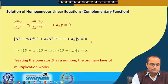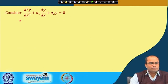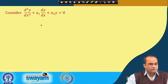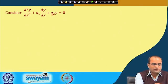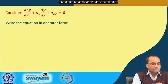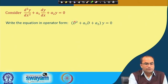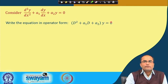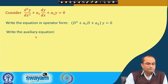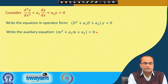Today we get to the solution of this differential equation. For simplicity, we consider the second order linear homogeneous differential equation with coefficients a₁ and a₂, right hand side zero. We write it in operator form: (D² + a₁D + a₂)y = 0. Then we write the auxiliary equation by replacing D with m: m² + a₁m + a₂ = 0.